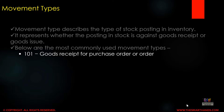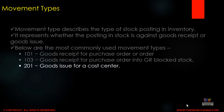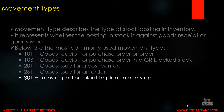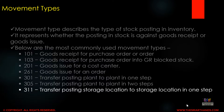Movement type 101 is goods receipt for a purchase order. 103 is goods receipt for a purchase order into GR blocked stock. 201 is goods issue for a cost center. 261 is goods issue for an order. 301 is transfer posting plant to plant in one step. 305 is transfer posting between plant to plant in two steps. 311 is transfer posting between storage location to storage location in one step. There are many more movement types, and in the coming videos we will talk about goods receipt for purchase order and goods issue to a cost center in more detail.